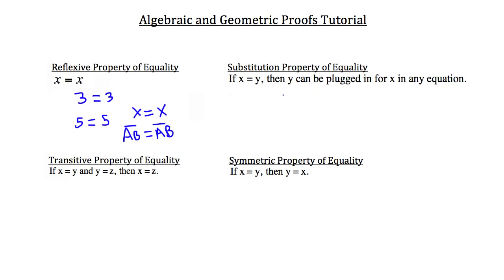The substitution property of equality states that if x equals y, then y can be plugged in for x in any equation. For example, if x equals 3 and we have the equation 3x plus 5 equals 14, then substituting 3 for x should also equal 14. 3 times 3 is 9, plus 5 equals 14, as it should be. We end up with two things equal to each other because it's a property of equality.